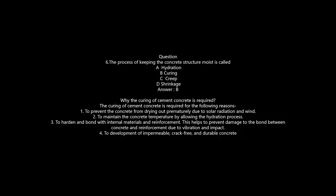The process of keeping the concrete structure moist is called: A) hydration, B) curing, C) creep, D) shrinkage. Answer: B — curing. Curing is required to: 1) prevent concrete from drying out prematurely due to solar radiation and wind; 2) maintain concrete temperature by allowing the hydration process; 3) harden and bond with internal materials and reinforcement; 4) develop impermeable, crack-free, and durable concrete.